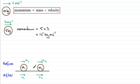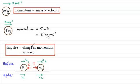M2 receives a bash to the right from m1 — we call that impulse i. And m1 receives an equal but opposite bash to the left, also called i. So impulse is defined as the change in momentum for a particle. It equals the final momentum, mass times final velocity mv, minus the initial momentum, mass times initial velocity u.